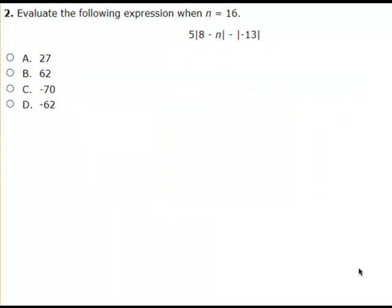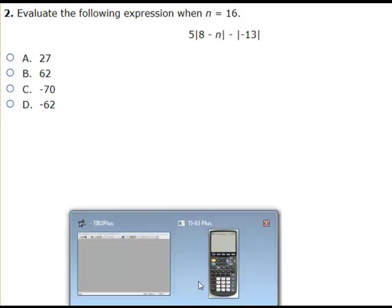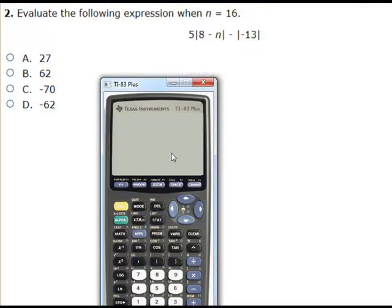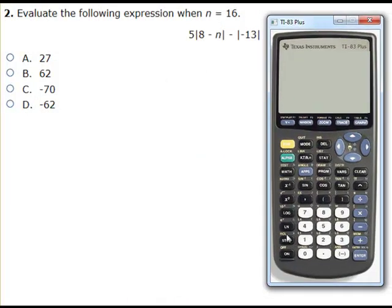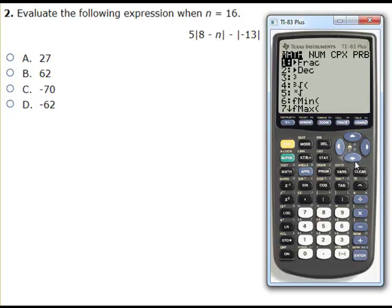Here's a relatively easy evaluation problem where they give me the value of my variable and we have some absolute value. I just want to quickly show you where you can find the absolute value on the calculator. This problem can easily be done without a calculator, but as a backup I can do 5, then times the absolute value. If you hit math and then push over, you're going to see option 1, ABS.